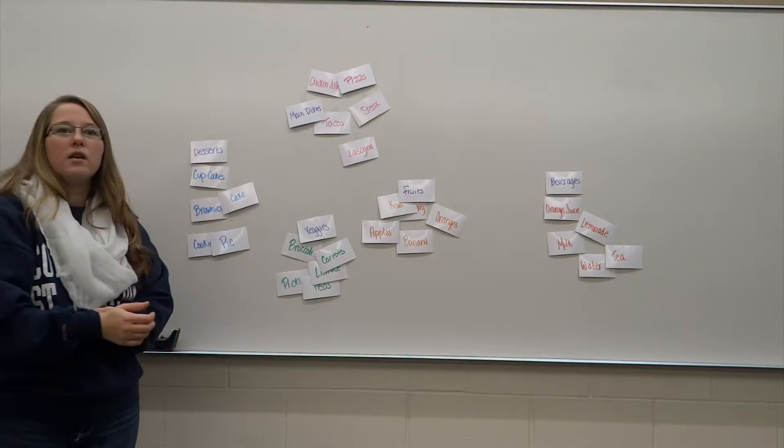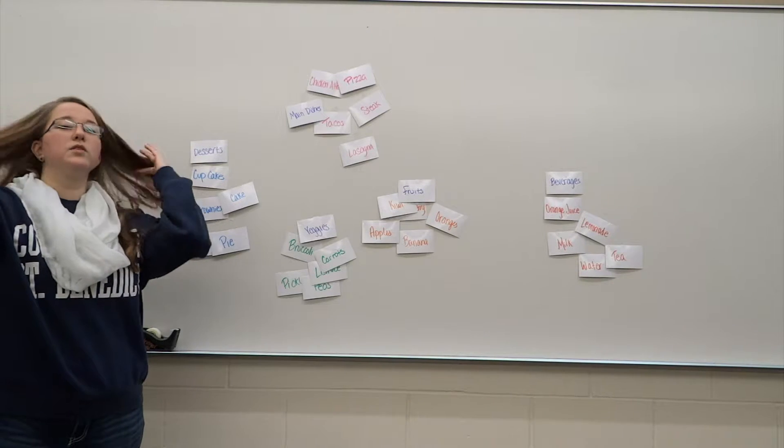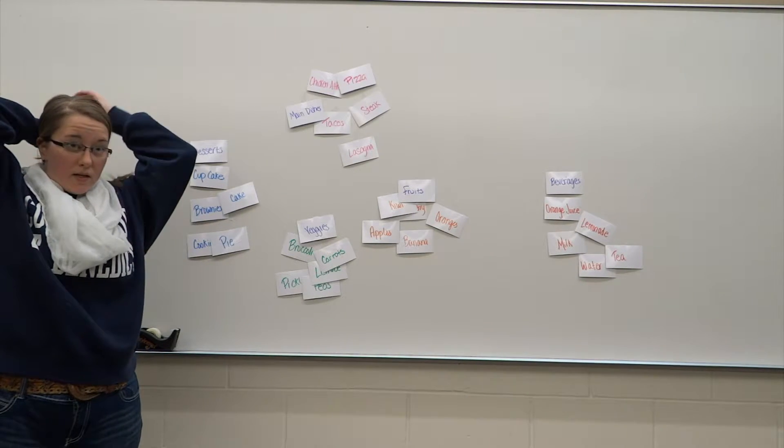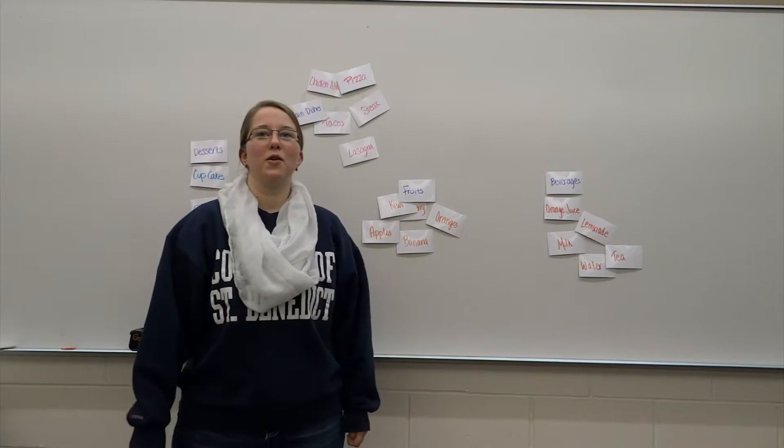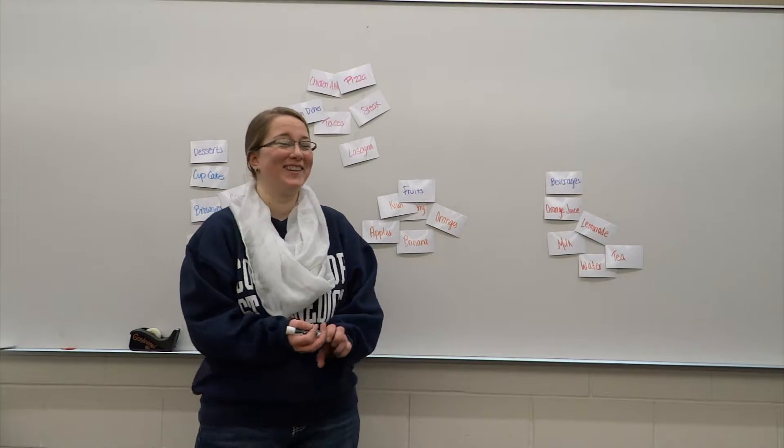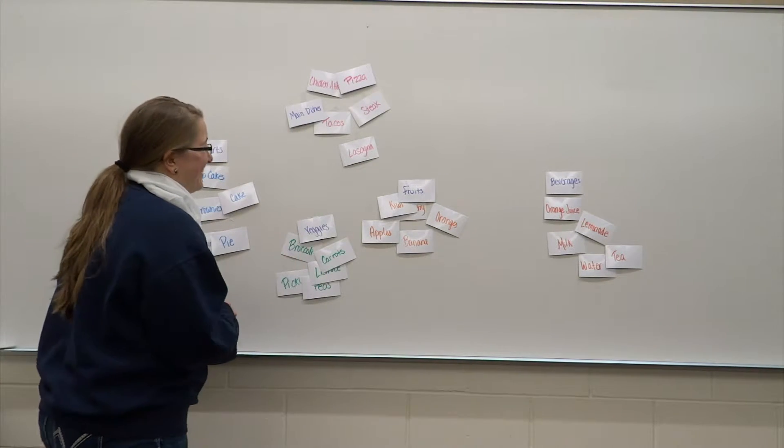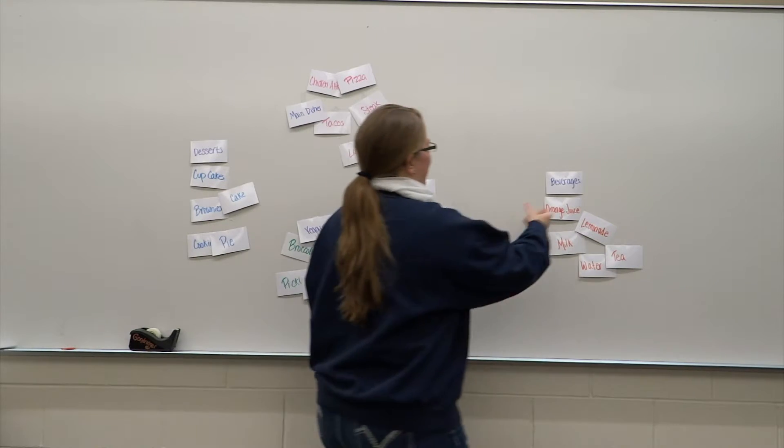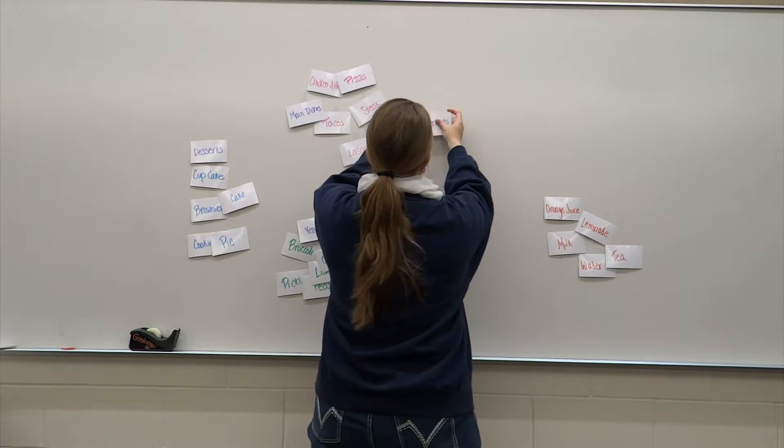So if you want to go ahead and kind of give a name to your categories, your groupings that you have, either on your Chromebooks or on a piece of paper, you're going to actually start writing your outline.